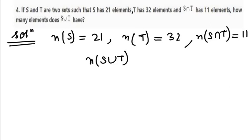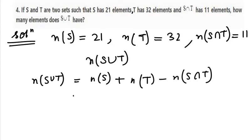So n(S∪T) equals n(S) plus n(T) minus n(S∩T). So n(S) is 21 plus 32 minus 11.